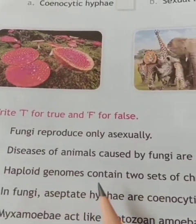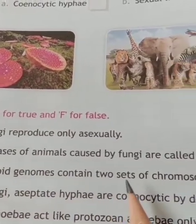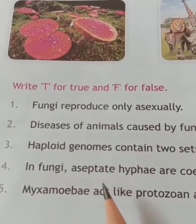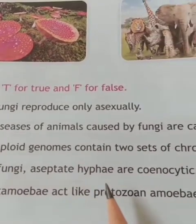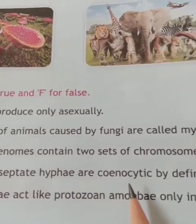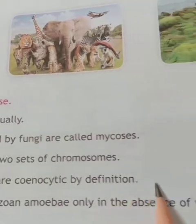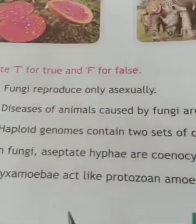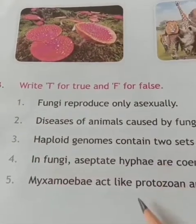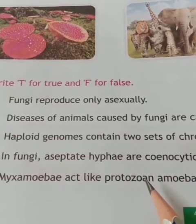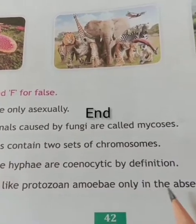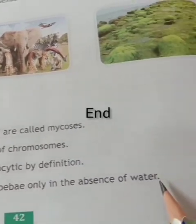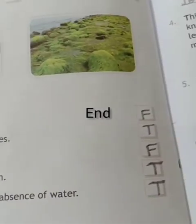Haploid genomes contain two sets of chromosomes – false. In fungi, aseptate hyphae are coenocytic by definition – true. What makes an amoeba act like a protozoan? An amoeba acts like a protozoan only in the absence of water – true.